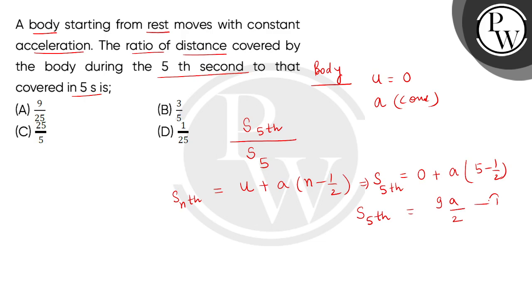Now we will find distance covered in 5 seconds, which is equal to ut plus half a t square, which is the second kinematical equation.